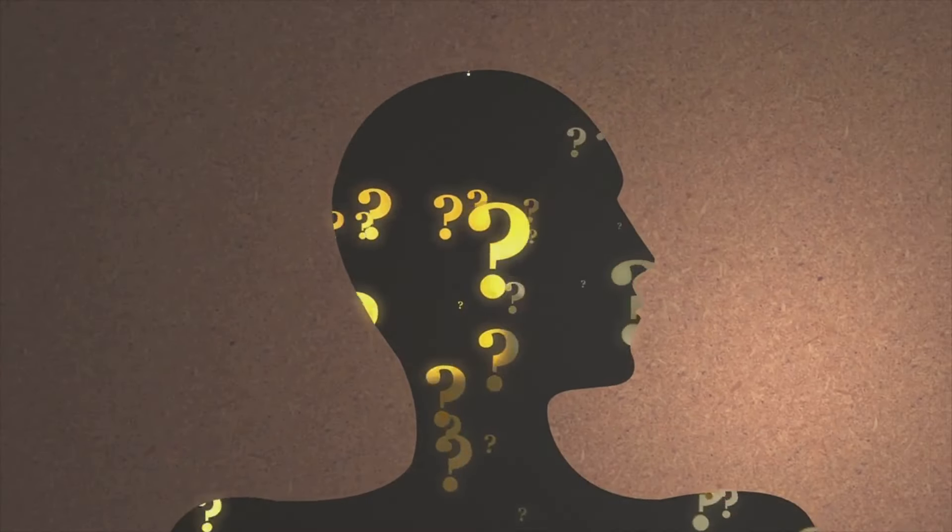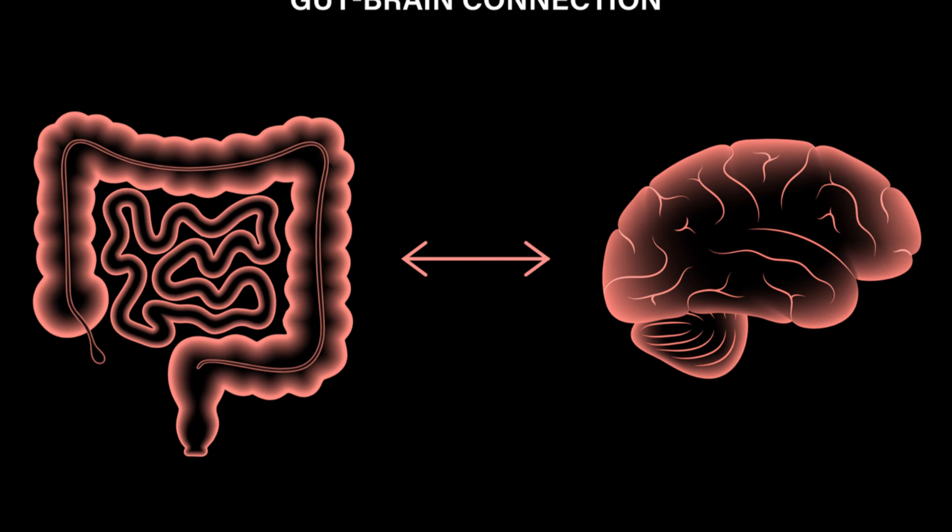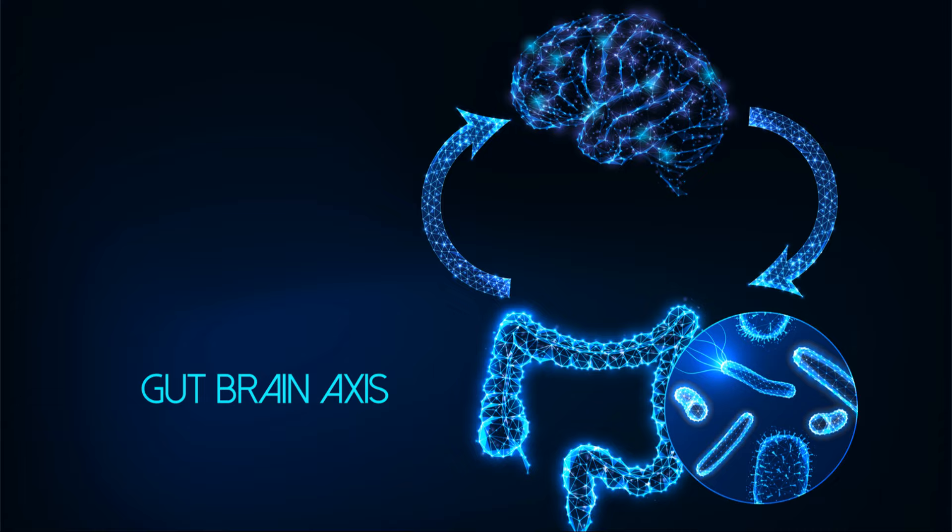Ever heard of the gut-brain axis? It's a bi-directional communication network between our gut microbes and our brain. Through this axis, our gut microbes can influence our mood, anxiety, and even cognitive function.